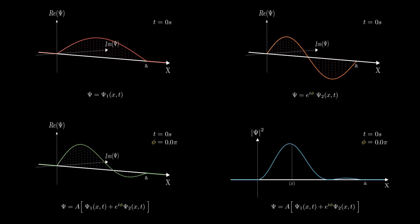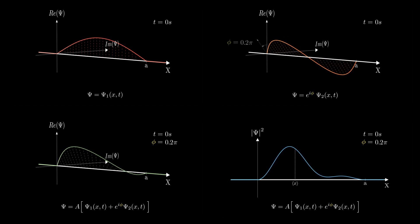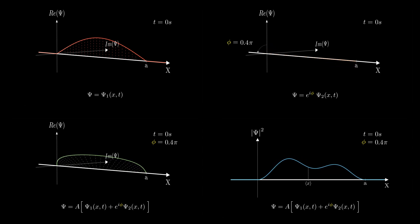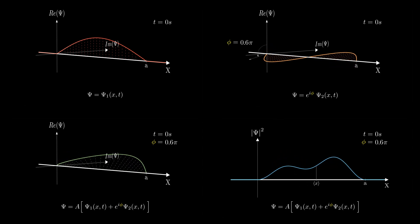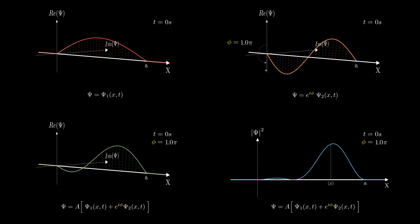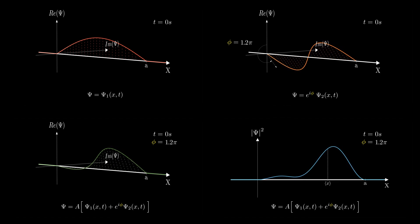Here's the fun part. Let's vary phi from 0 to 2π while keeping time at 0. Notice how the probability density changes. At certain values of phi, the interference is constructive, enhancing certain regions of the probability density, while at others it's destructive. This dynamic is a direct result of the relative phase between ψ₁ and ψ₂.